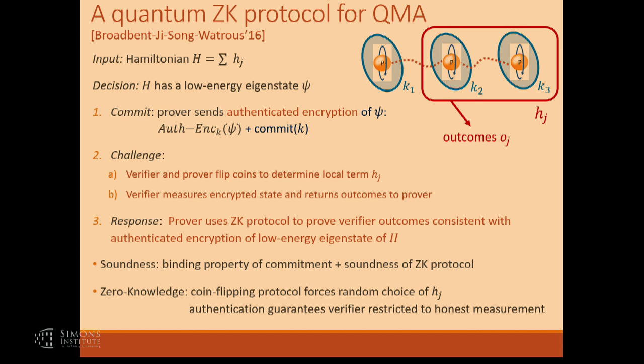The soundness relies on two things: the binding property of the commitment, and the zero-knowledge protocol needing to be sound against quantum adversaries. For the zero-knowledge property, there are two ingredients: the soundness of the coin-flipping protocol, and the authentication. The second property of authentication is that if the verifier attempts a measurement it's not supposed to perform, when it sends the outcomes to the prover, the prover will determine that the wrong measurement has been performed. Think of it as inserting traps in the authenticated encryption — if the verifier performs an arbitrary measurement, it hits the traps and the prover detects this and refuses to decode the verifier's outcomes.